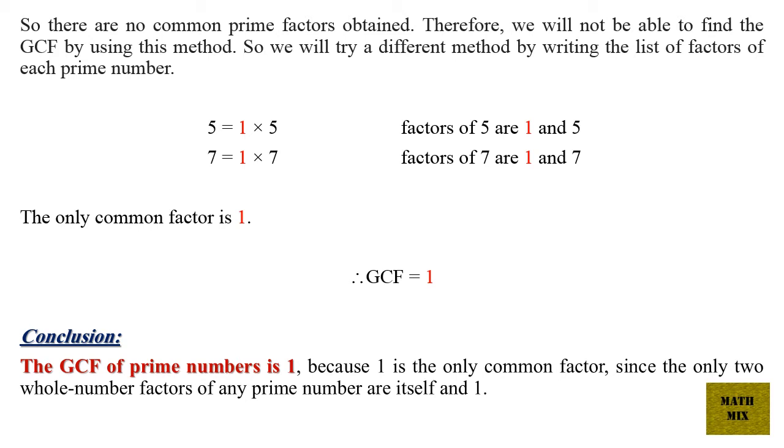5 equals 1 times 5. The factors of 5 are 1 and 5. And 7 equals 1 times 7. The factors of 7 are 1 and 7.